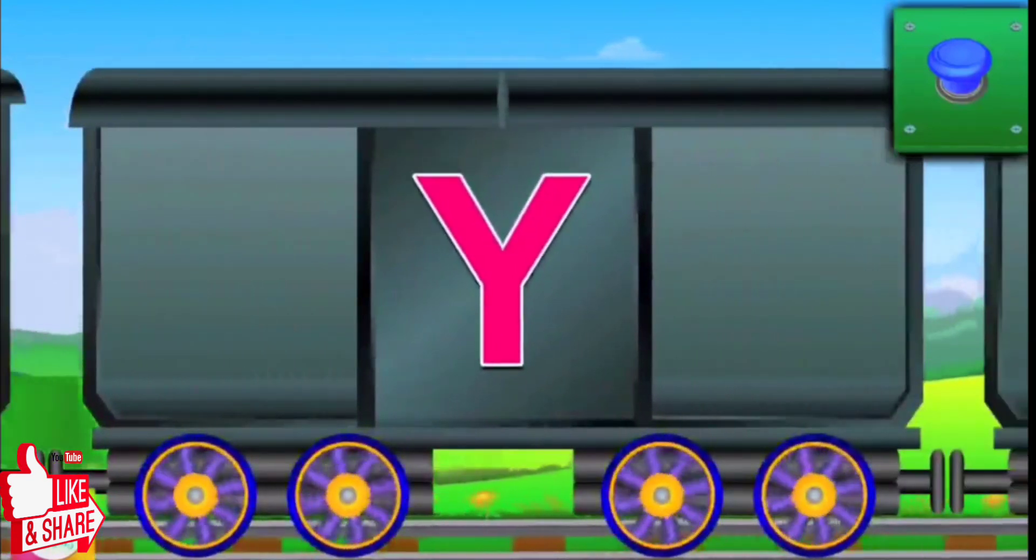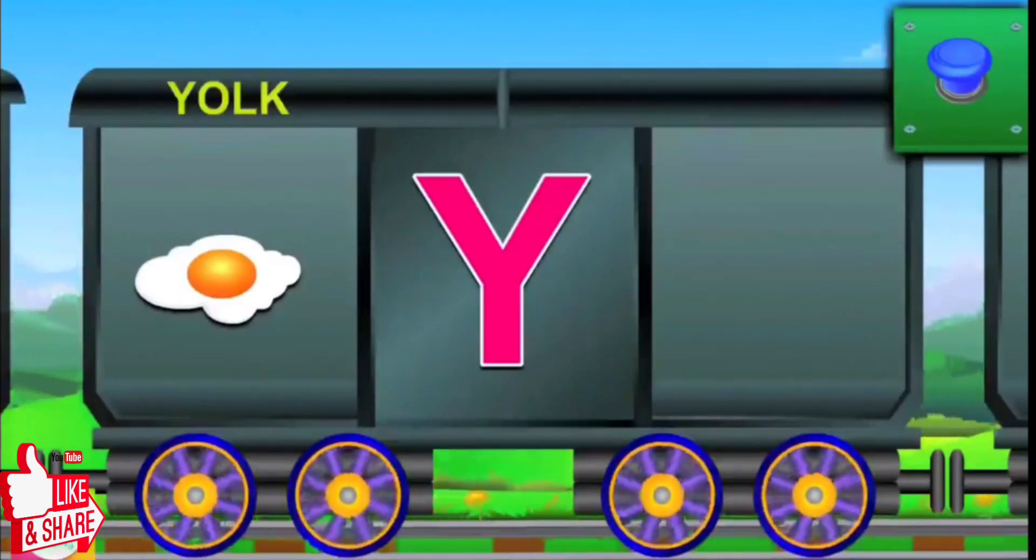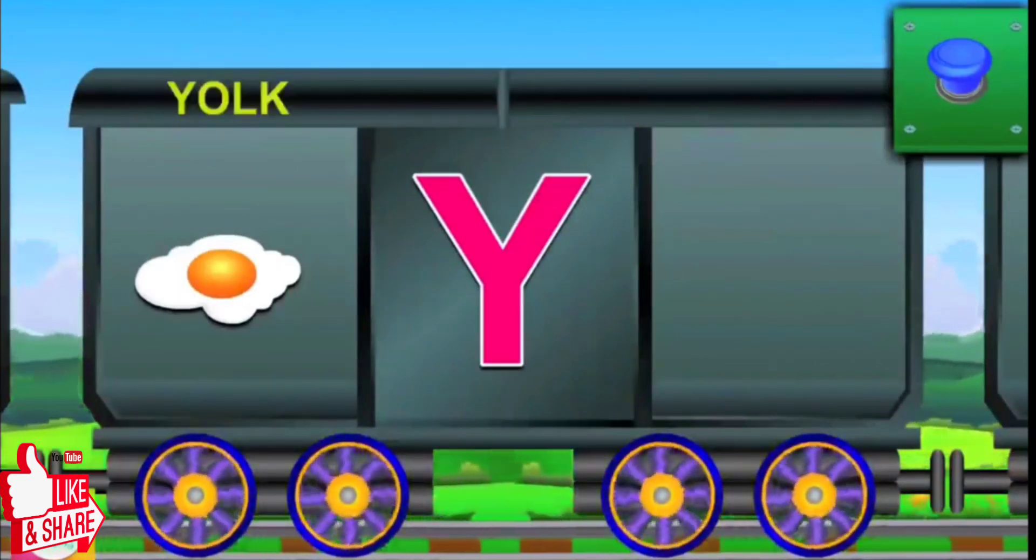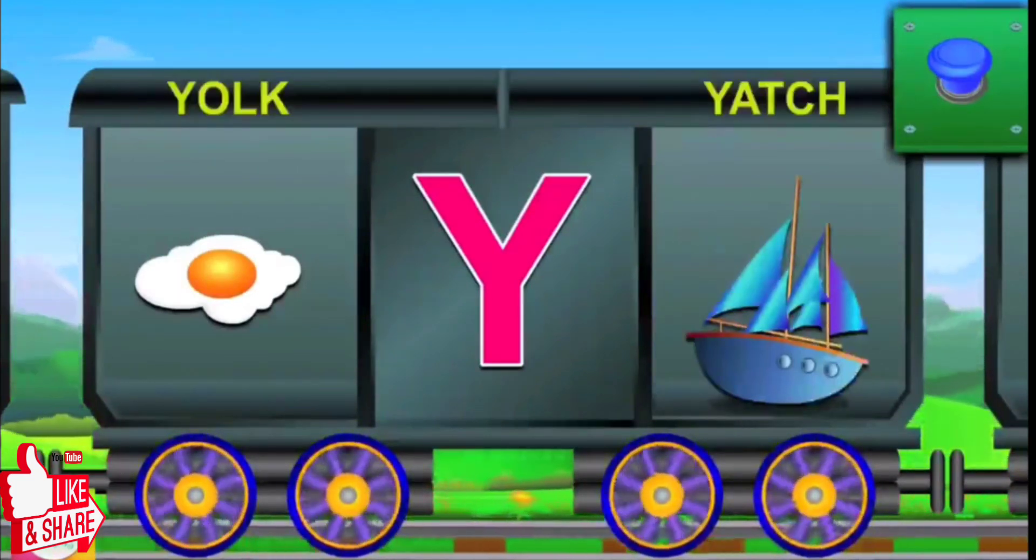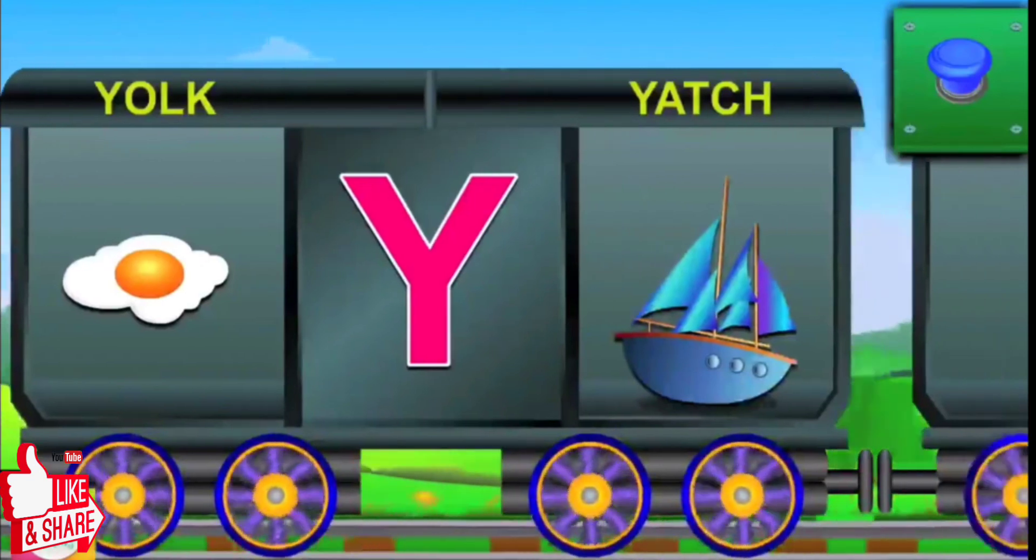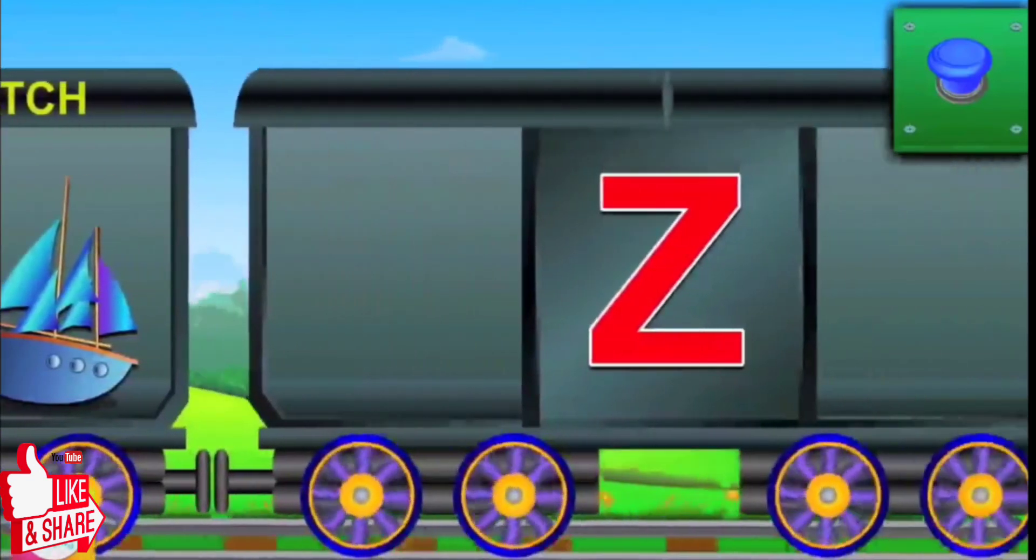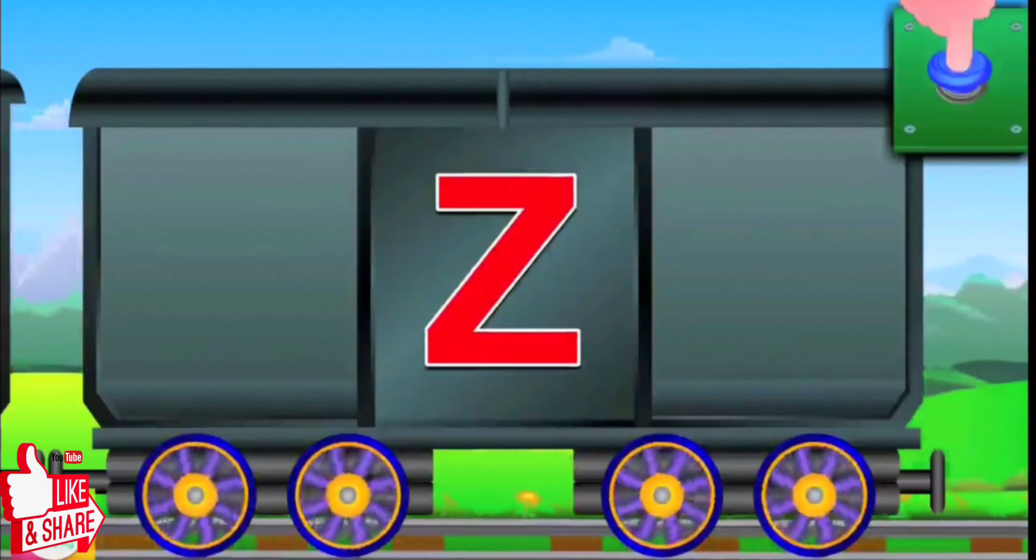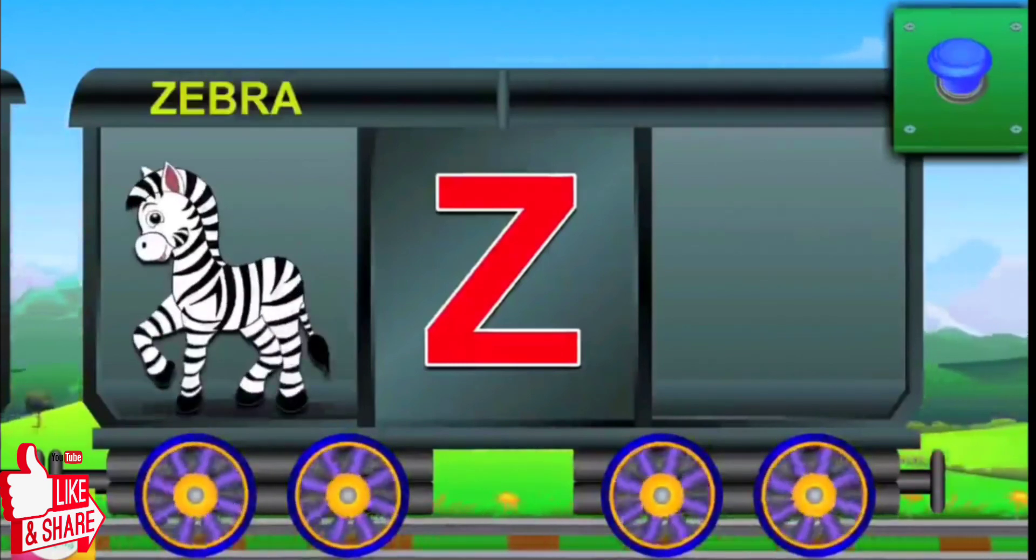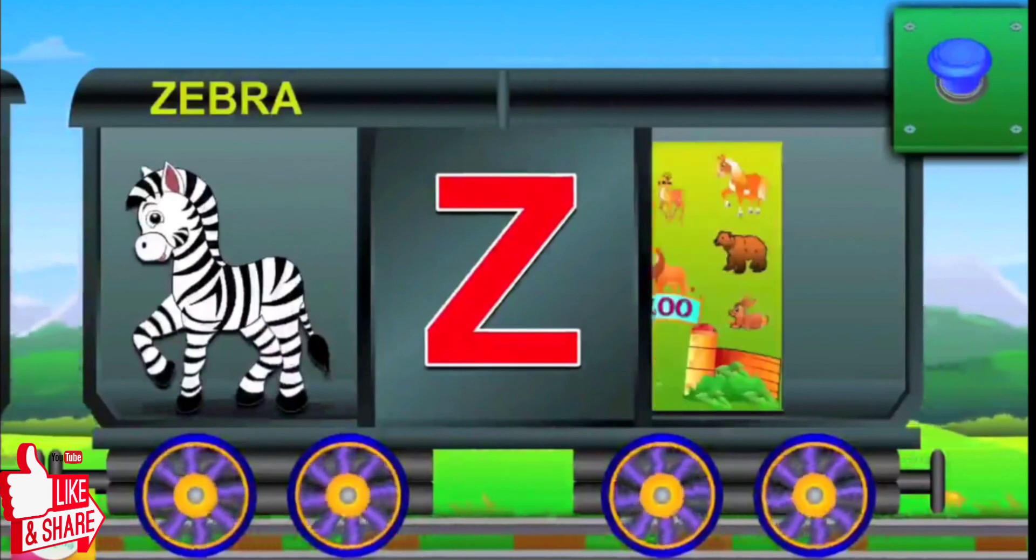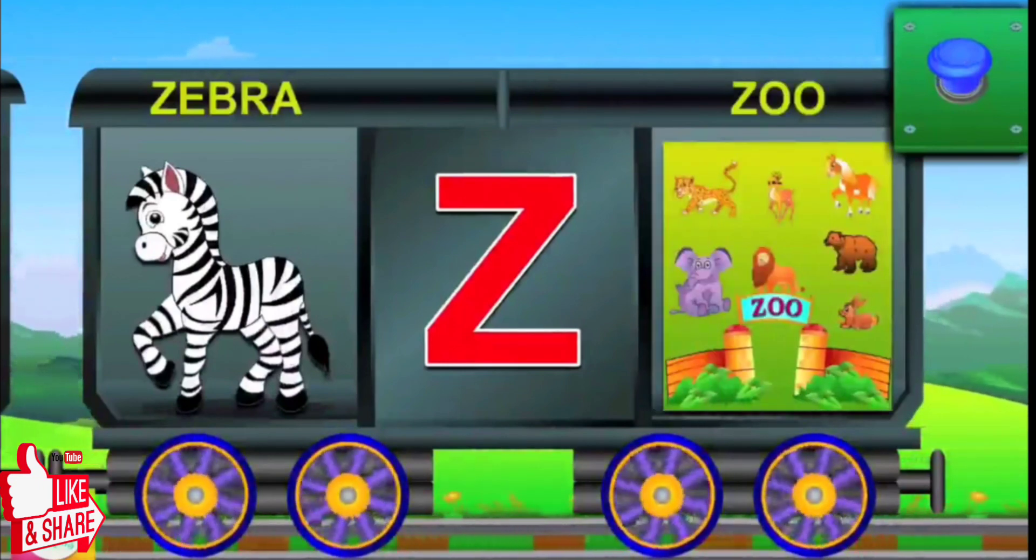Here comes Y. Y for yoke, and the yoke is yellow. Y for yacht, and the yacht is blue. Hi, Z. Z for zebra, and zebra has stripes. Z for zoo, and zoo is full of animals.